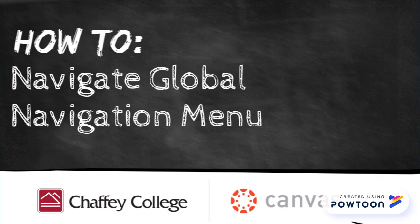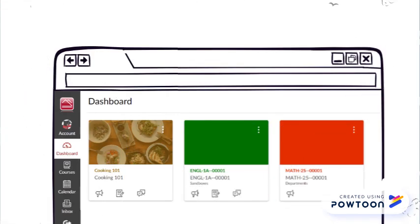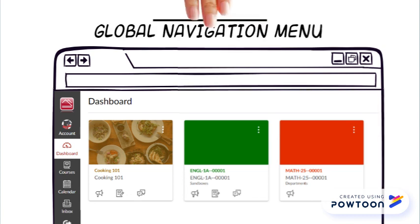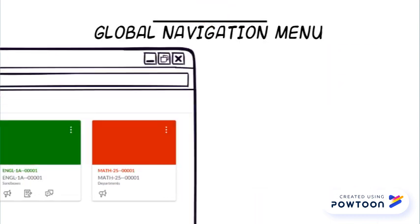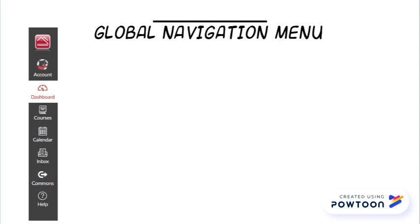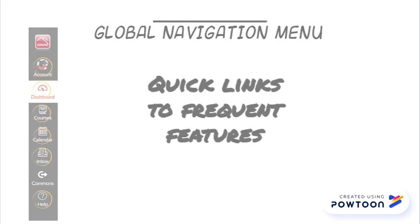How to Navigate the Global Navigation Menu as a Student. The Global Navigation Menu is located on the left side of every page in Canvas. It provides quick links to frequently used Canvas features.